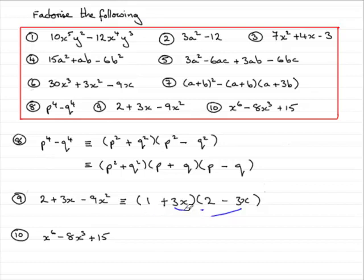Now you could obviously write this as 2 minus 3x times 1 plus 3x. It wouldn't make any difference. But essentially that is it because none of these two factors factorizes any further. So that's fully factorized.